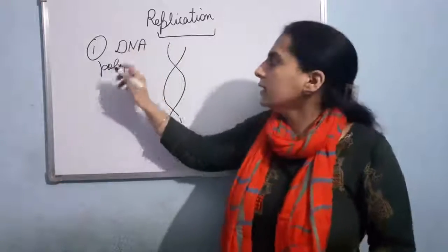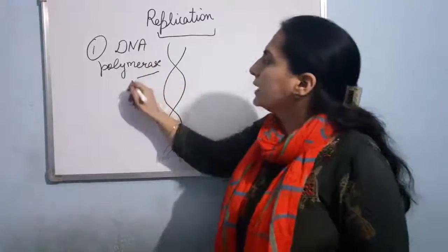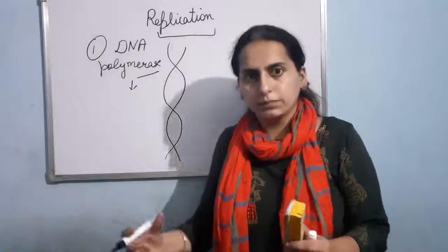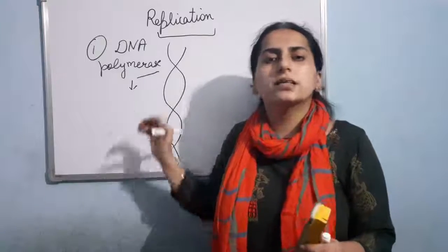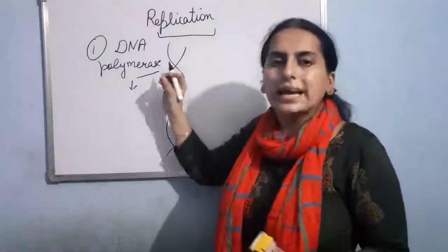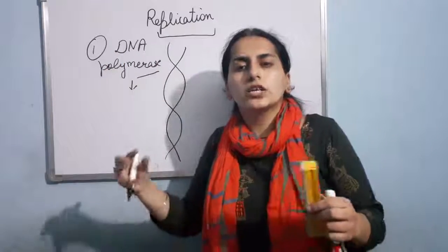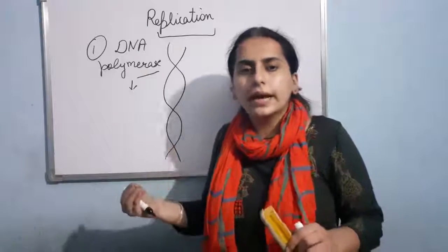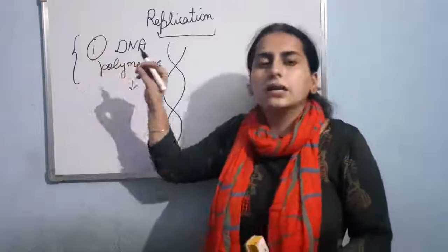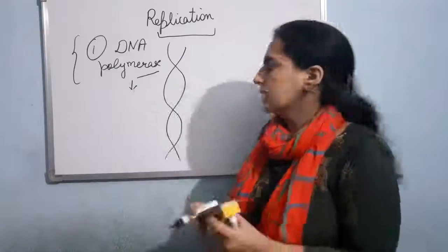It is DNA-dependent polymerase — DNA-dependent means it depends upon the DNA. Now why has it been given the term DNA polymerase? Polymerase means it will carry out the process of polymerization. We have discussed the structure of DNA and that DNA is made up of nucleotides. So basically what this enzyme is doing: it helps in the polymerization of deoxyribonucleotides, which results in the synthesis of a new DNA molecule. This is the main enzyme involved in the process of replication.